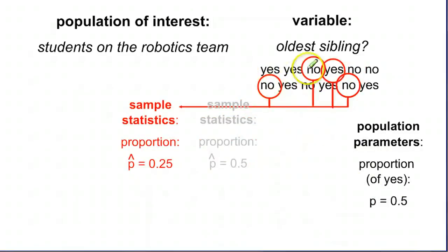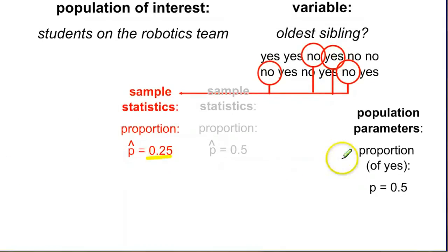Take another sample, no, no, yes, no. Uh oh. So now only 0.25 of our population, a quarter of our population, is answering yes, is the oldest sibling. So that is not the same as our entire population here.